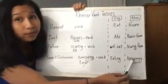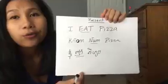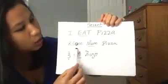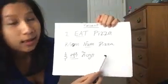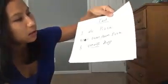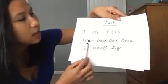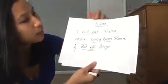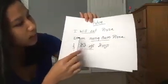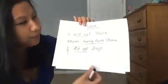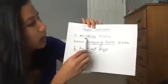For present continuous 'eating', we add the word 'kompong' in front of the verb. Now let's use the phrase 'I eat pizza' in Khmer: 'knyom nyam pizza' — this is present tense. Past tense 'I ate pizza' in Khmer is 'knyom ban nyam pizza'. For future tense 'I will eat pizza' in Khmer: 'knyom none nyam pizza'.